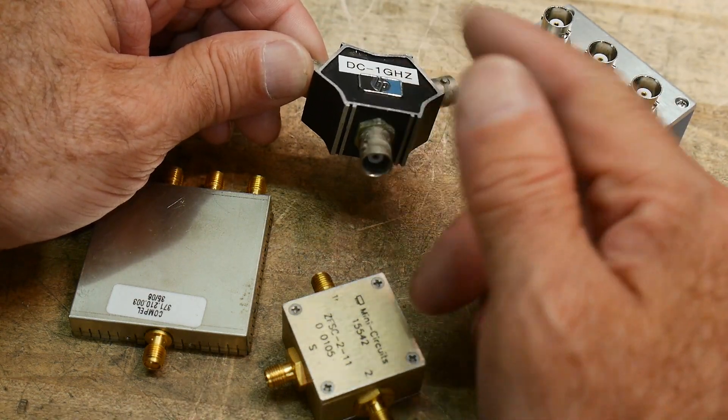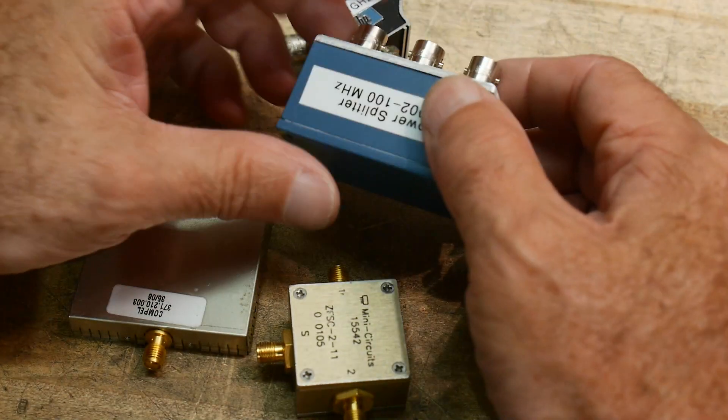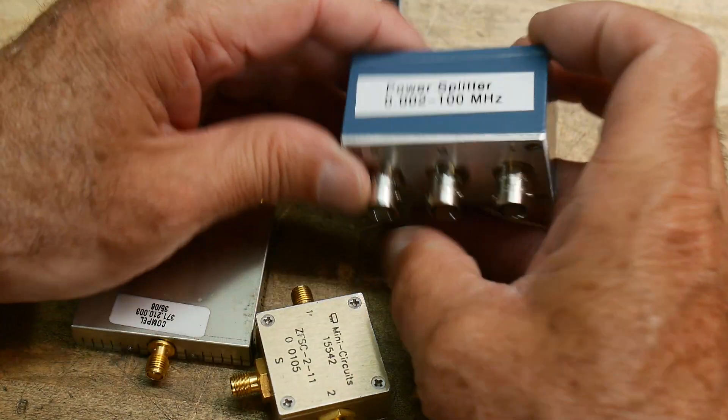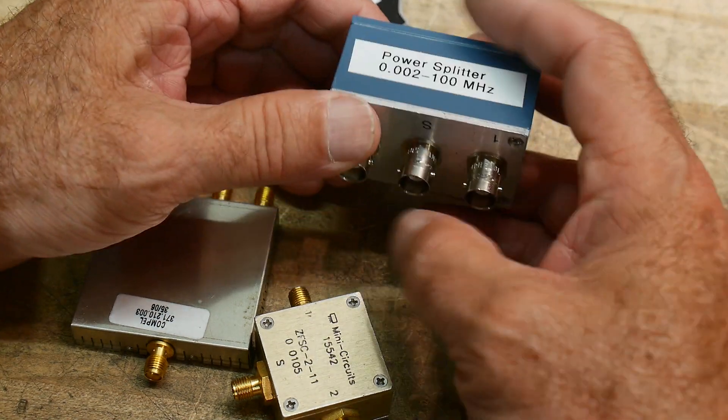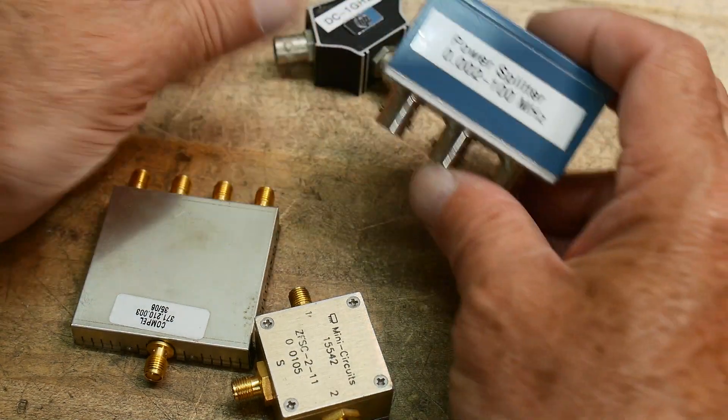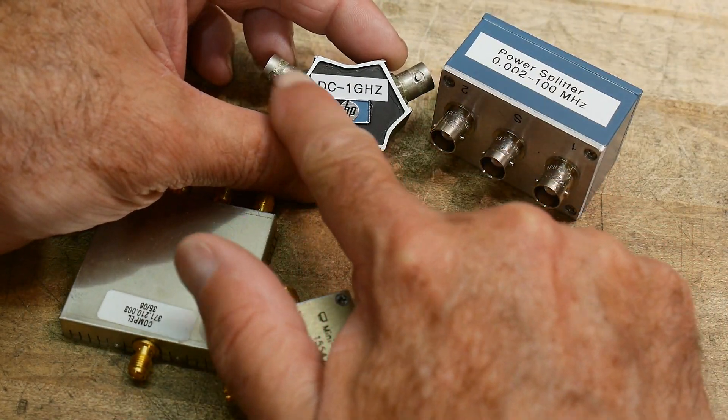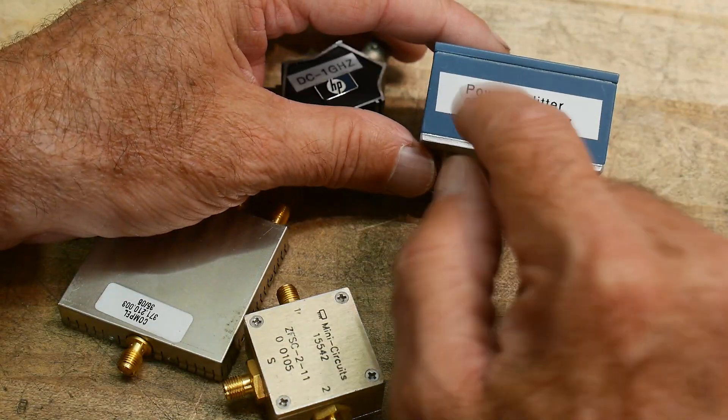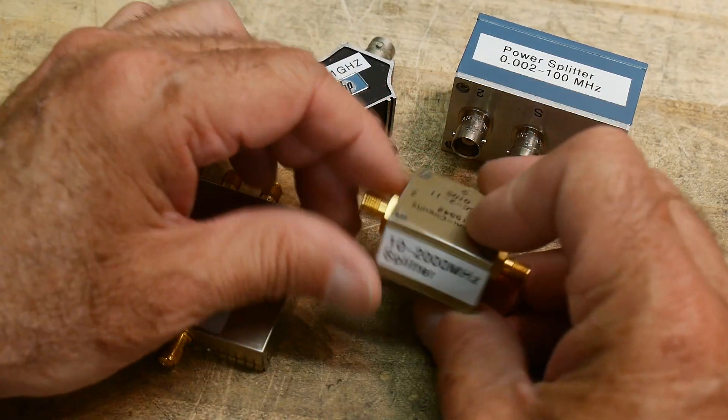I don't remember, had a return loss bridge and some other things and this was part of the kit, a splitter. And this is a splitter by Mini Circuits and this one's good from 0.002 to 100 megahertz, very broad. So this is probably, I think this one is actually constructed a particular way. This one I think has resistors in it, so this one says DC, so this one definitely has resistors.